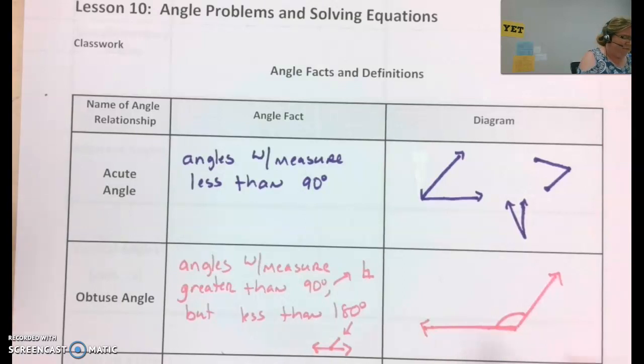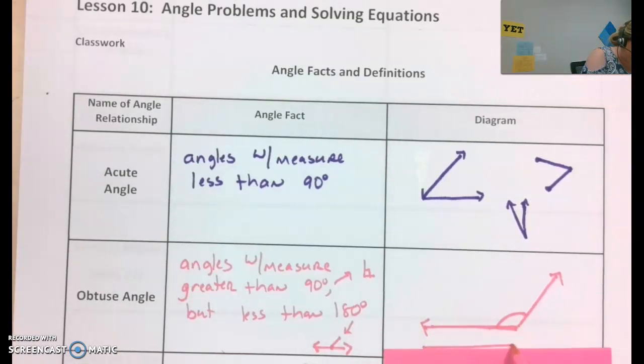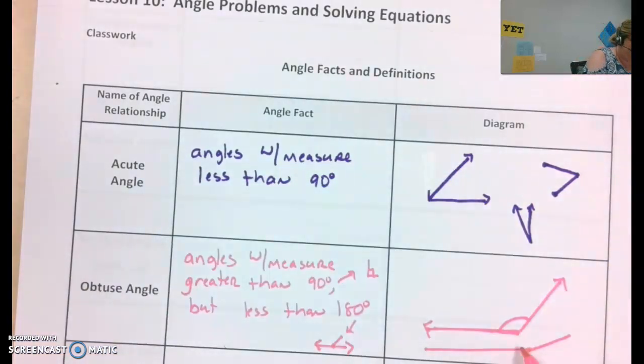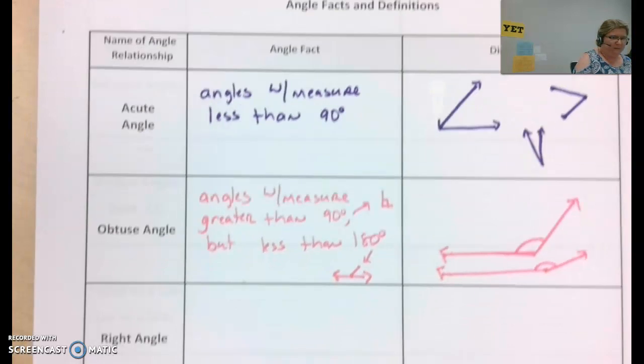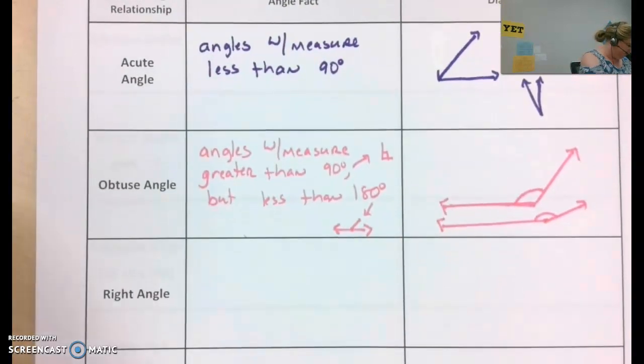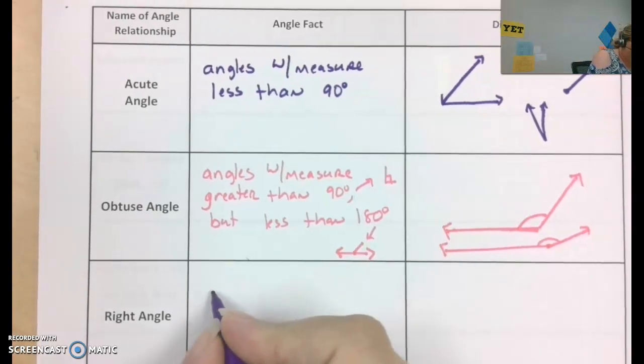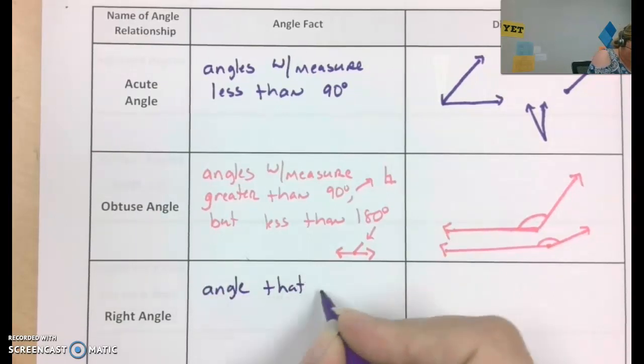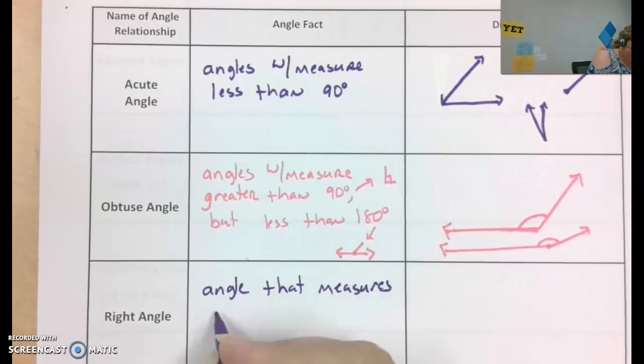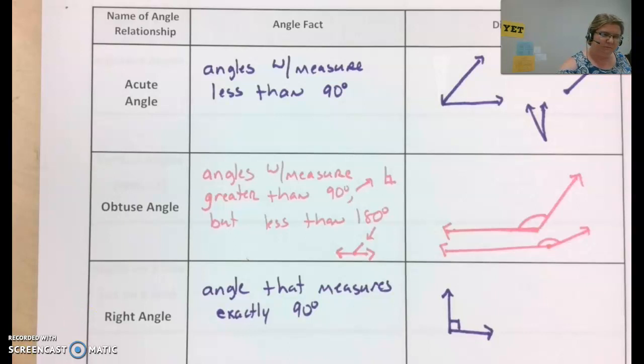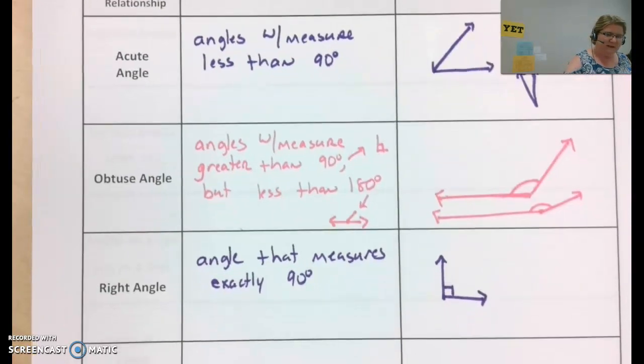Or it could be almost a straight line, just filled up just a smidge. So, two examples here of obtuse angles. A right angle is an angle that measures 90 degrees exactly. It can be facing any direction.